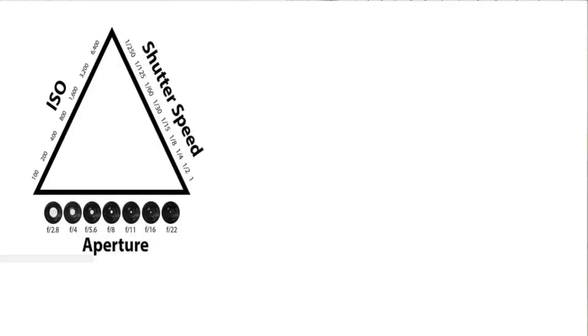We will start with basic parameters such as white balance, aperture, and shutter speed. The very important parameter for lighting is ISO. These three — ISO, aperture, and shutter speed — are known as the exposure triangle.